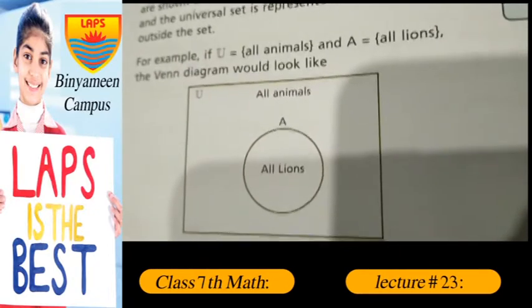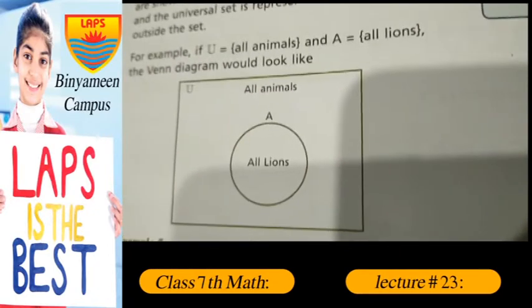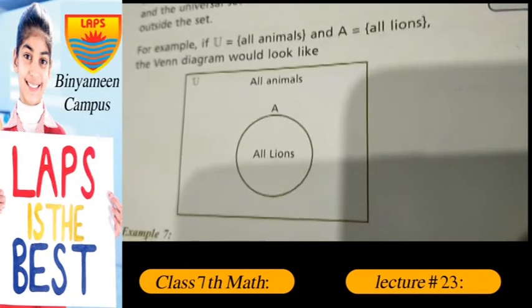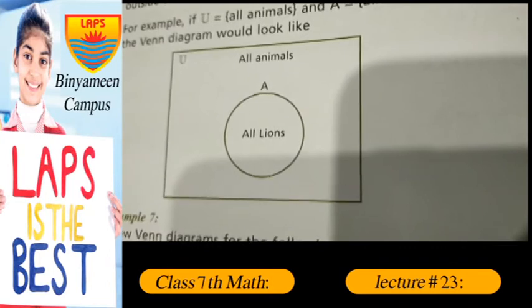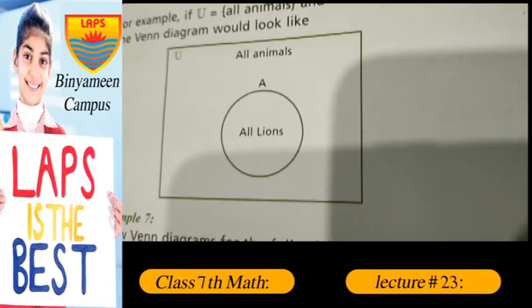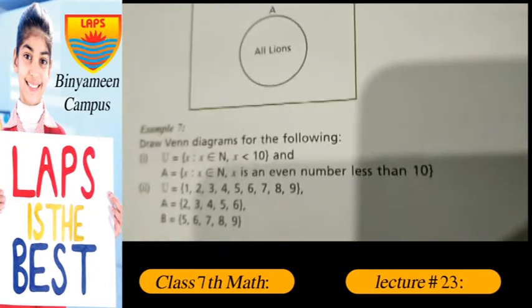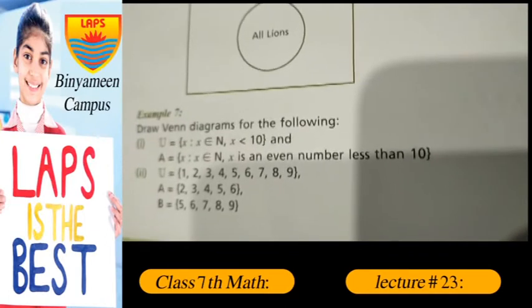For example, U equals all animals and A equals all lions. The Venn diagram would look like, U all animals and A all lions. Draw Venn diagram of this.